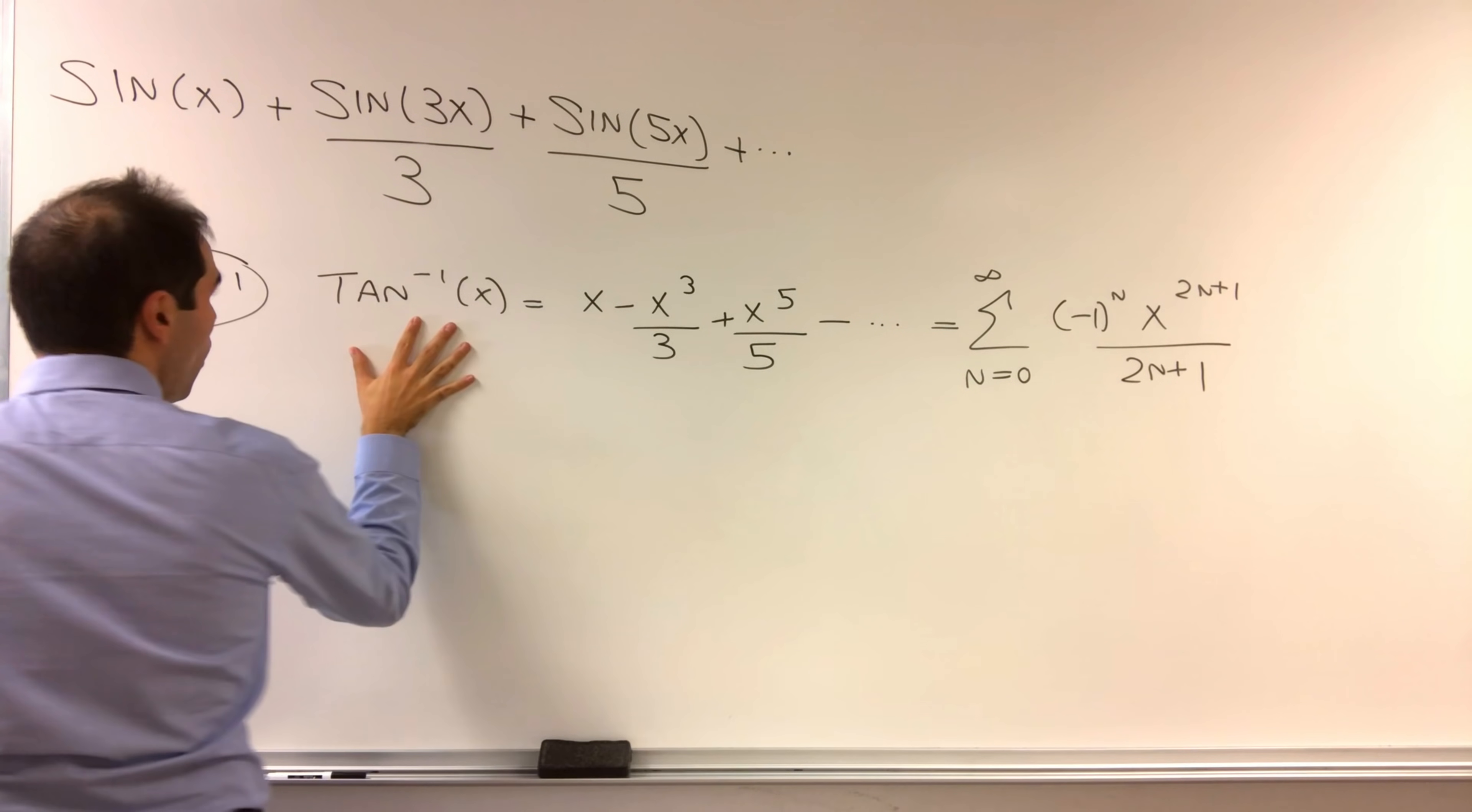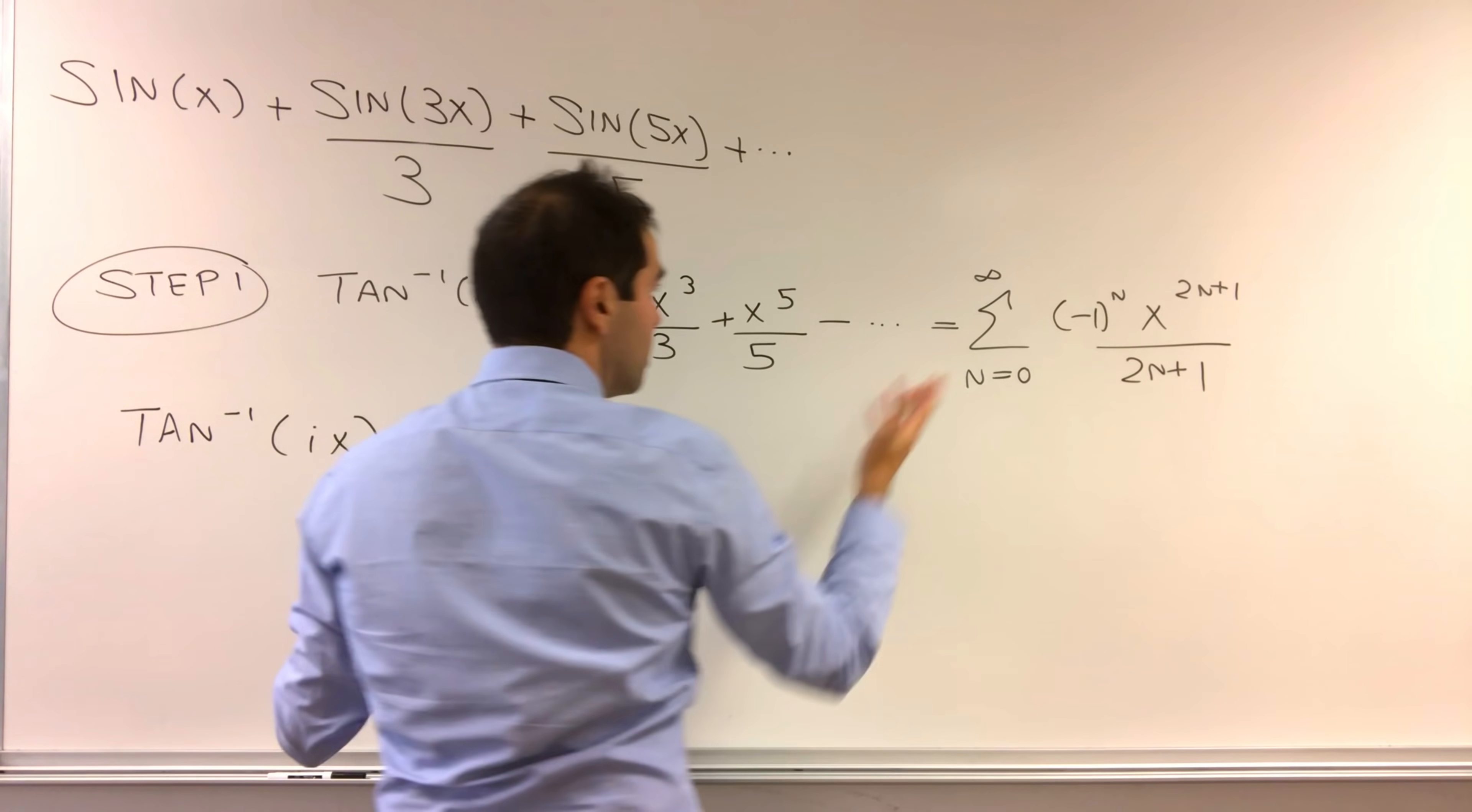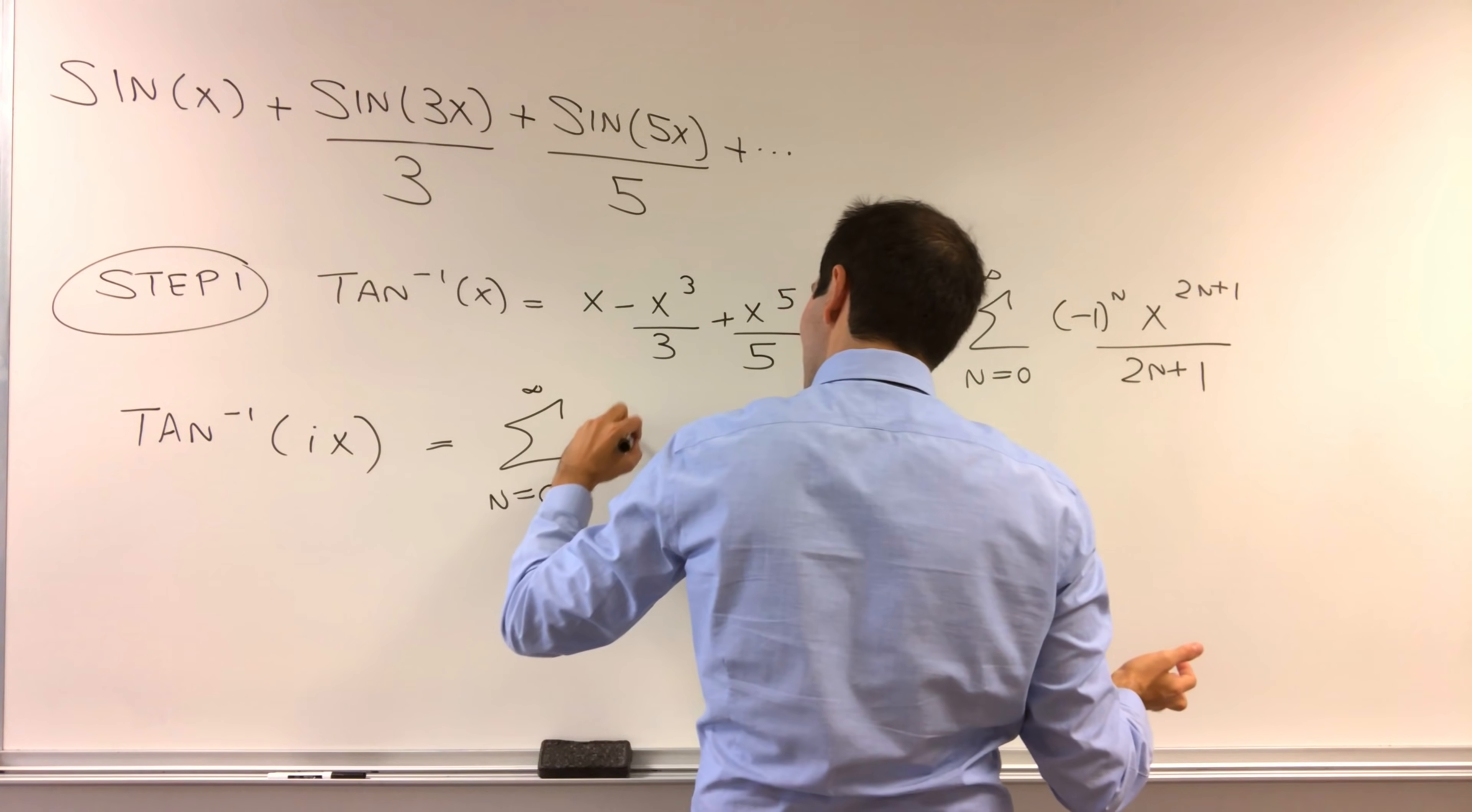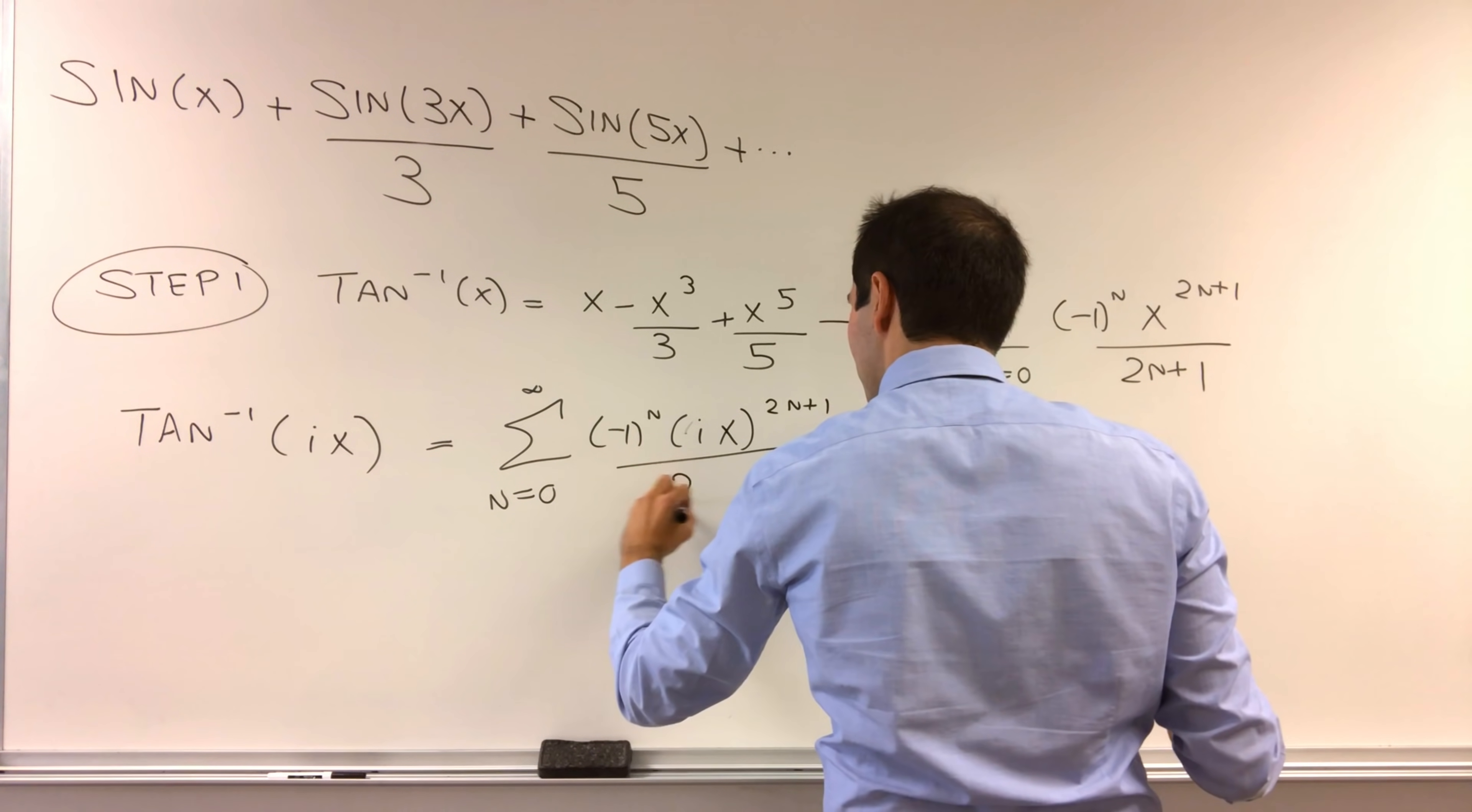Because how about we now do arctangent of ix? Then it's just that series when you plug in i, sum n from 0 to infinity, minus 1 to the n, ix to the 2n plus 1 over 2n plus 1.